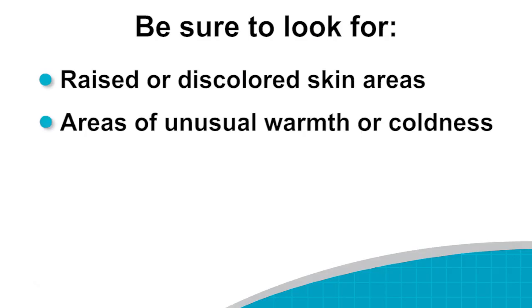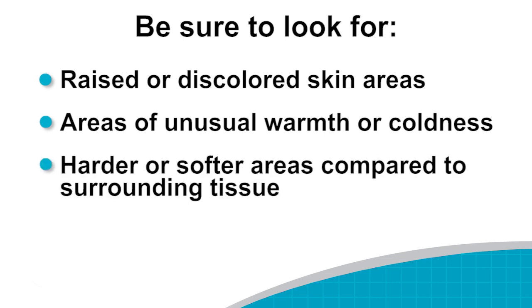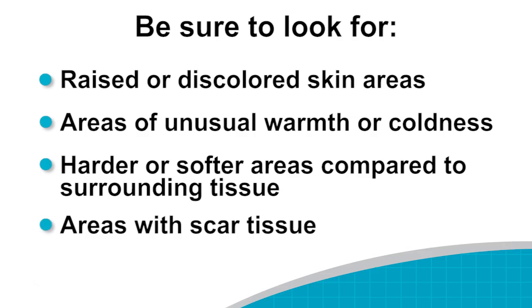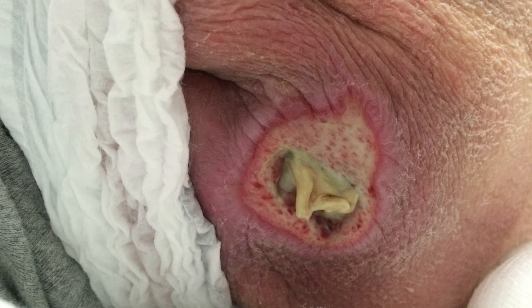Next, we're going to look at the chest and abdomen. We're only going to uncover the area we're examining to maintain privacy. We're going to look for any raised or discolored areas, areas of warmth or cold, and any areas that are hard or softer than surrounding tissue. Scar tissue is important to observe because it never heals to the same tensile strength as regular skin — this is especially relevant in the sacral area where it can predispose someone to pressure ulcers. In bariatric patients, we're going to look between the skin folds, which are areas prone to moisture issues, pressure, and fungal infections. In female patients, we're going to look under the breast tissue for the same reasons.